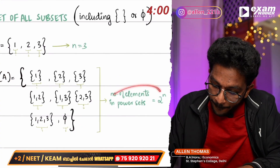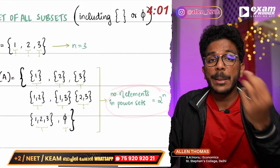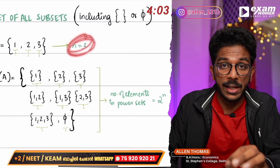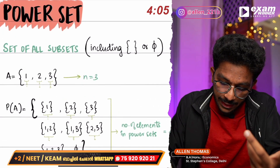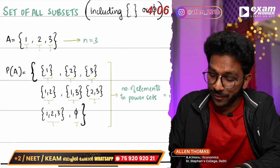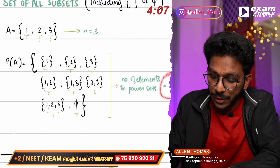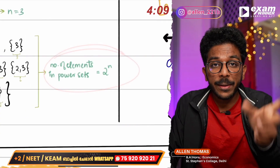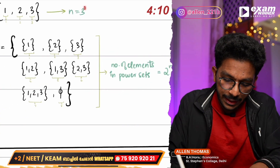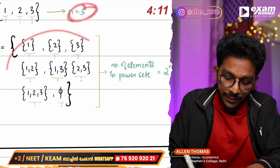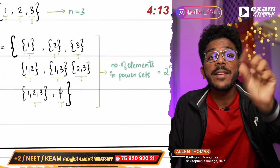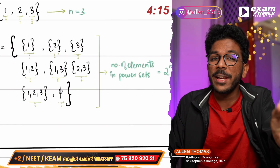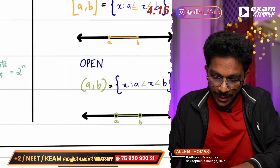The number of elements in the power set: here n = 3. The formula is 2 raised to the n, which is 2³ = 8. That formula is very important.